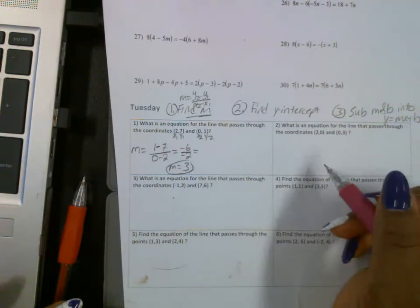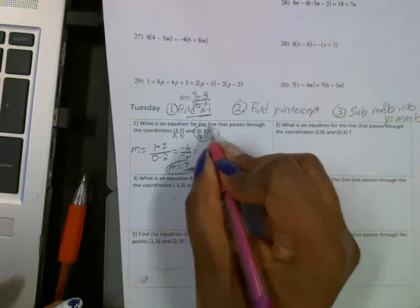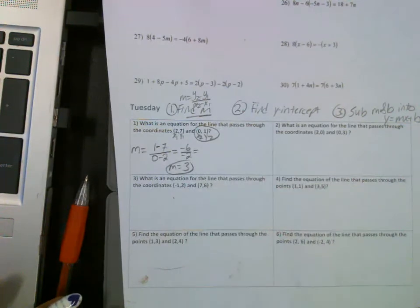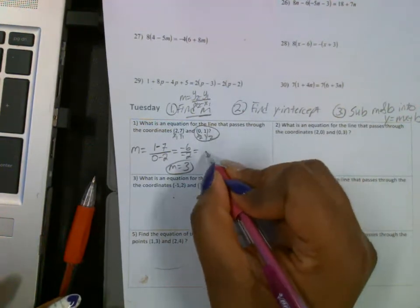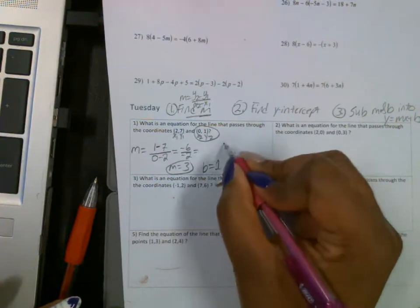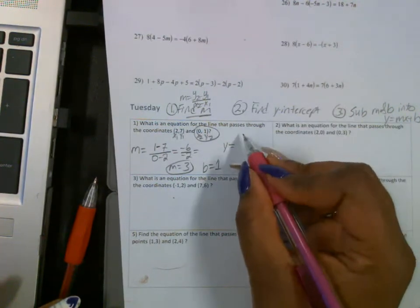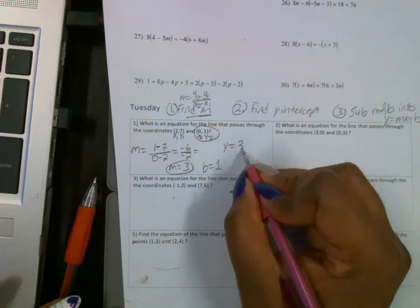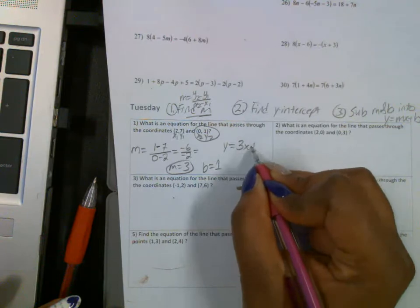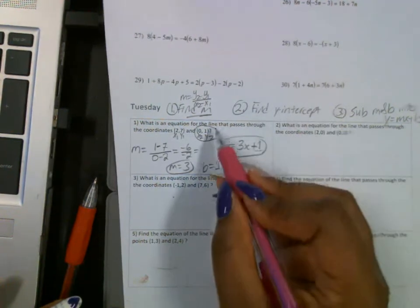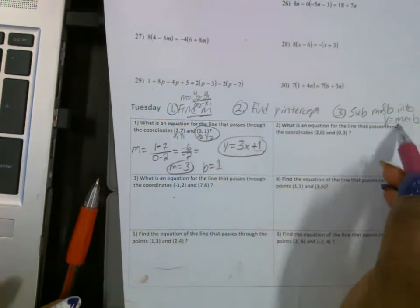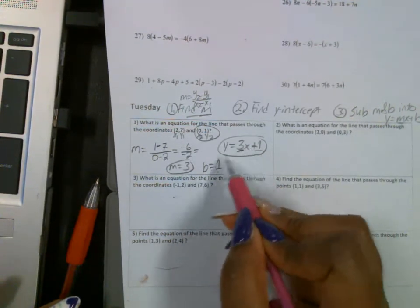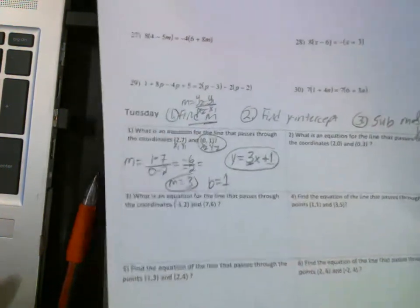So now the b is 1 because this is where the line crosses the y-axis, where x equals 0. So my b here is 1. You don't have to do extra work or extra steps to find b, it's already given. So this is y equals 3x plus 1. Remember, we're writing it in y equals mx plus b form. Your m is 3 and your b is 1, so you substitute those values into slope intercept form.